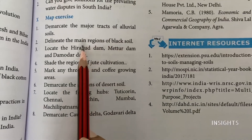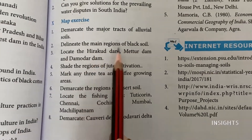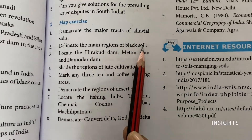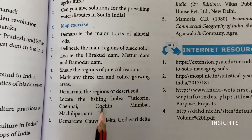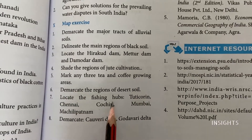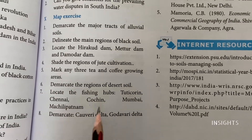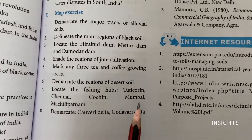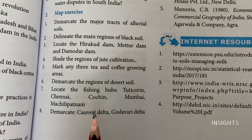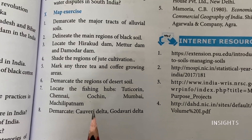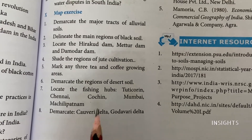The second question is the main regions of black soil. We will also take up the fishing hubs: Tuticorin, Chennai, Cochin, Mumbai, and Machilipatnam. So these are all the things we are going to mark in the first map. Let's get started.